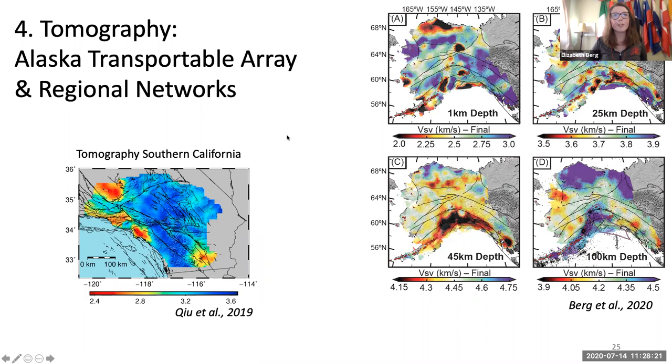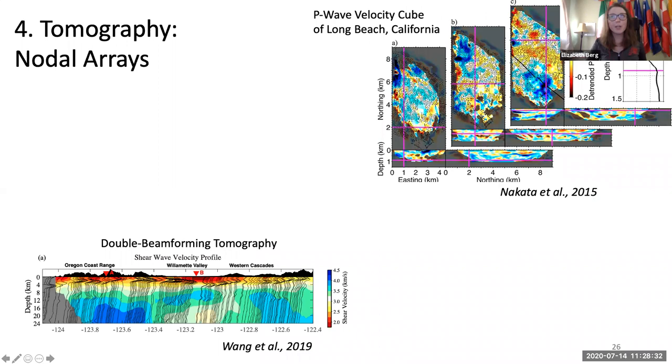And there's tomography from nodal arrays. There are so many I couldn't choose. So I chose two and then just moved on. There's double beamforming from Haijiang and from Nori Nakata, there's this beautiful P-wave velocity cube of Long Beach, California. But there are lots of studies using nodes to do tomography via cross correlation. Go ahead and check out some of those papers and post them in the Slack.